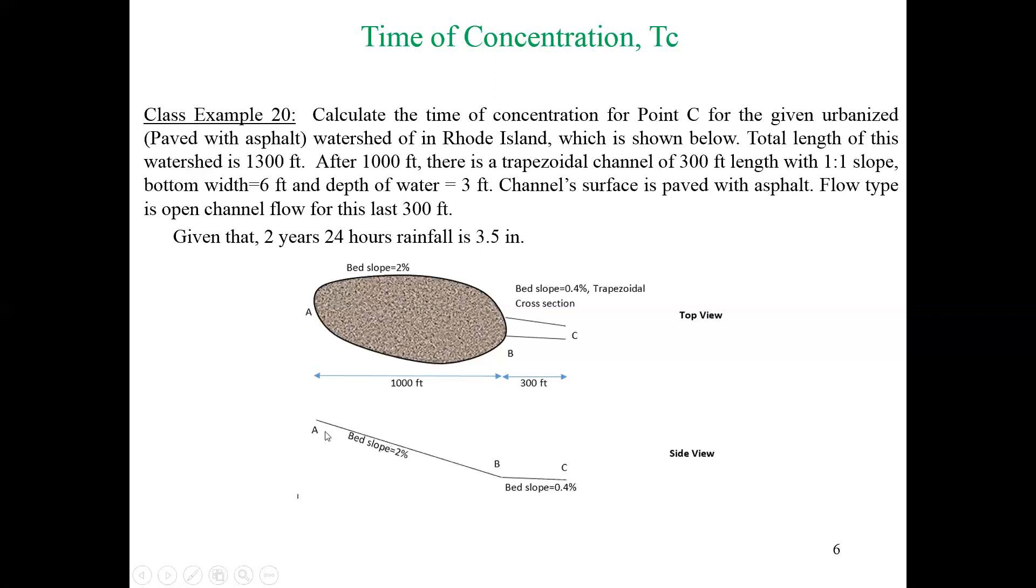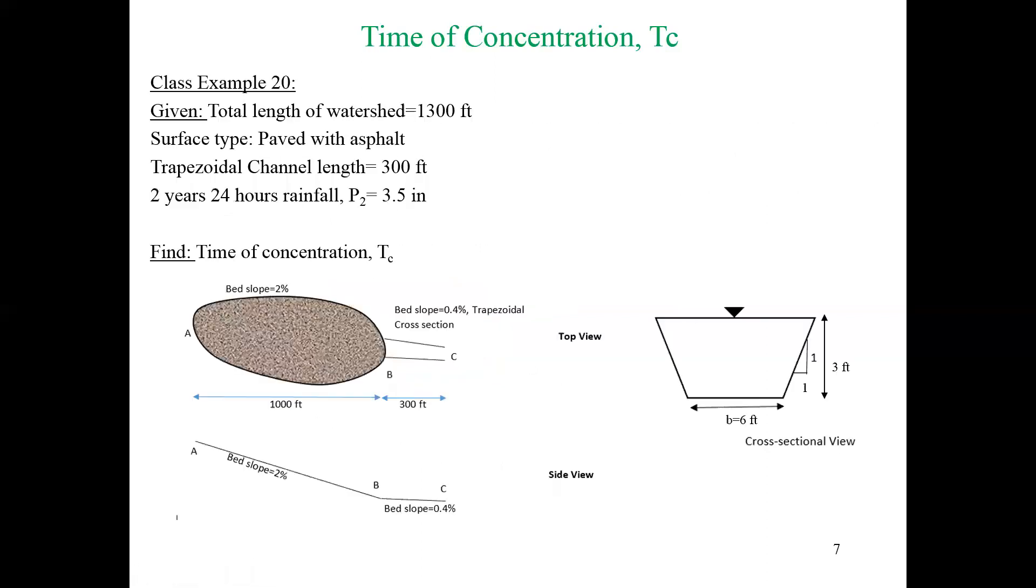From side view it will look like this. For the open channel in trapezoidal section, the bed slope is 0.4 percent, so obviously it is way less than 2 percent. We will start to solve this question as usual from given values. This is the cross-sectional view of the trapezoidal section: bottom is 6 feet, depth of water is 3 feet, and the side slope is 1:1.